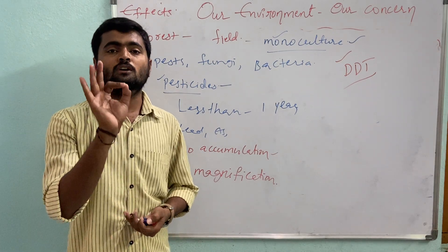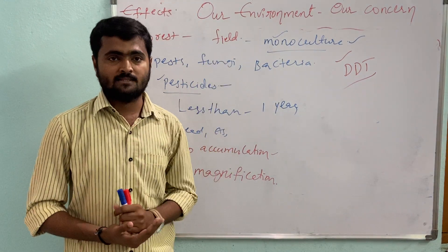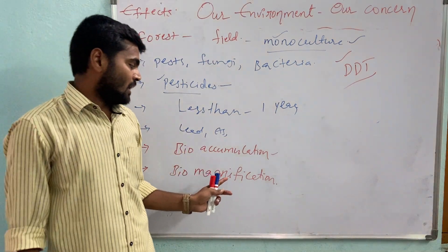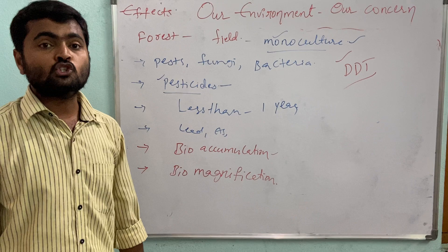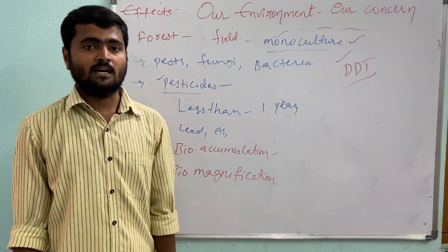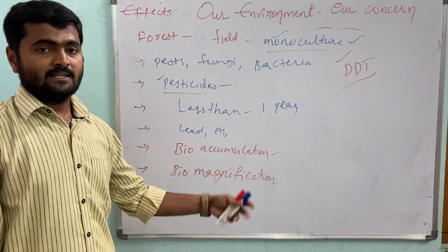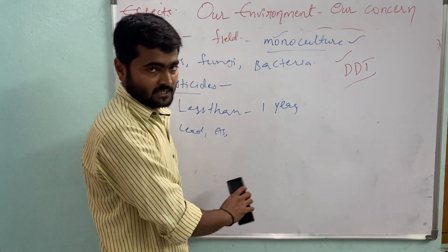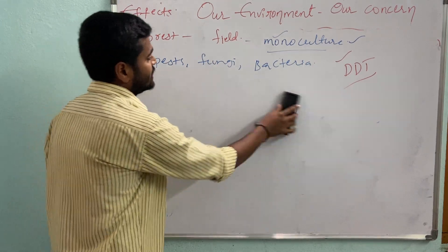When pollutants like DDT reach a saturated level in the body of eagles, they damage the eggshells before hatching. Whenever the concentration of these pollutants magnifies at each trophic level, they show harmful effects on top-end carnivores. In the next class, we will discuss bioaccumulation and biomagnification through a case study of Edulabad Water Reservoir.